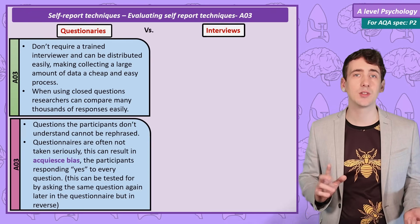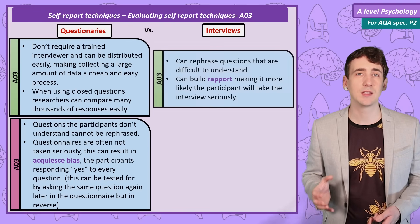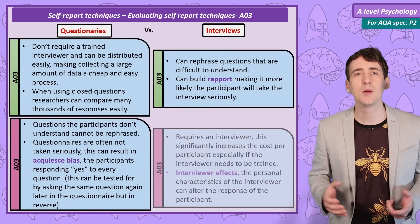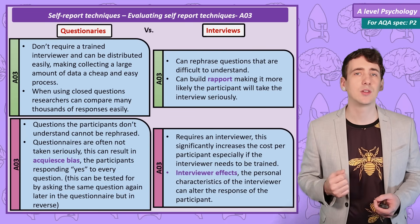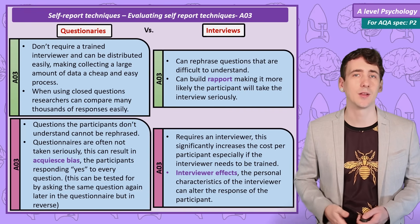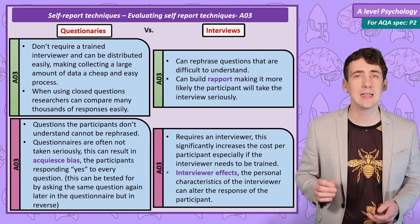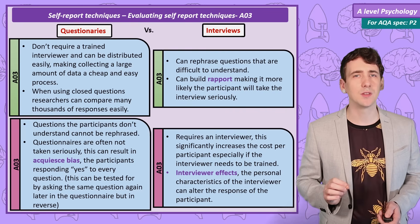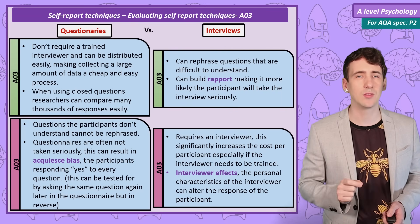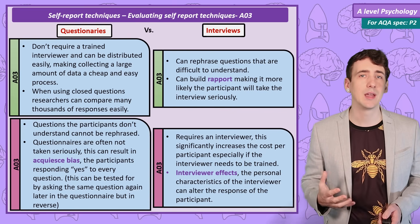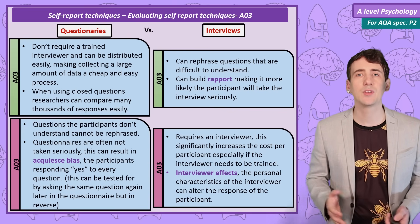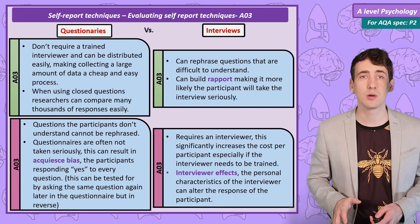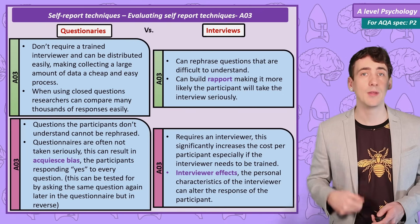We can evaluate interviews by flipping the evaluations of questionnaires around. A strength of interviews is that the interviewer can rephrase hard-to-understand questions and build rapport with participants so they take the research seriously. Negatives include needing a highly trained interviewer, resulting in smaller numbers of participants and a higher cost. An additional problem with interviews is interviewer effects — we can get very different responses depending on characteristics such as gender, ethnicity, and personality of the interviewer. For example, think about the different responses teenagers might give in interviews about sex, drugs, or opinions on old people, depending on whether the interviewer was the same age and gender or much older and the opposite gender.